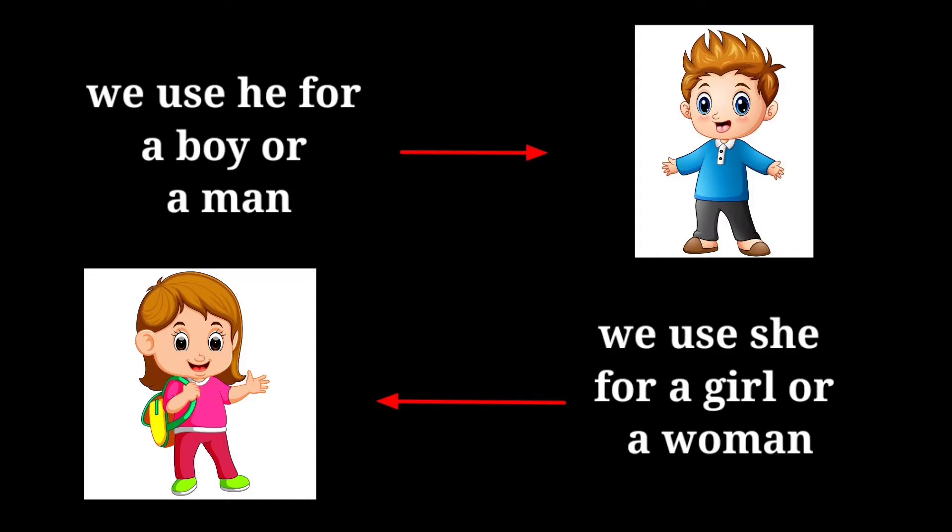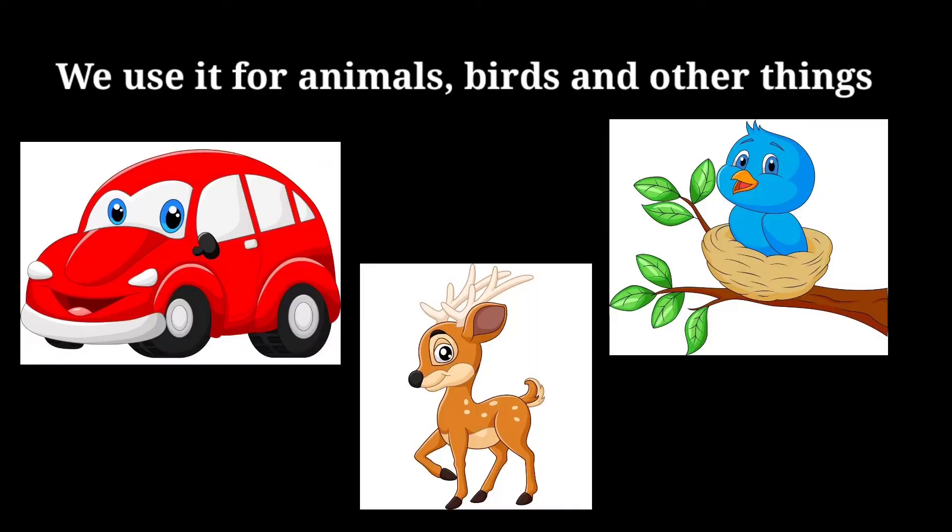Now we are going to learn about the uses of it. We use it for animals, birds, and other things. Other things means non-living things.